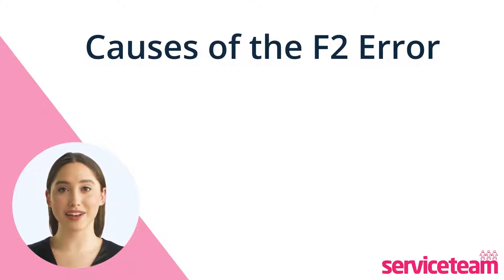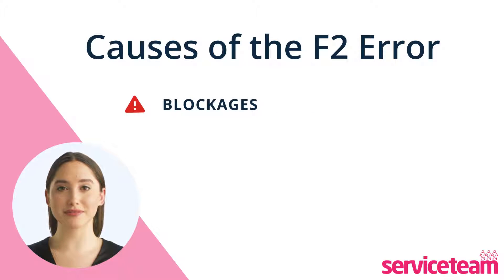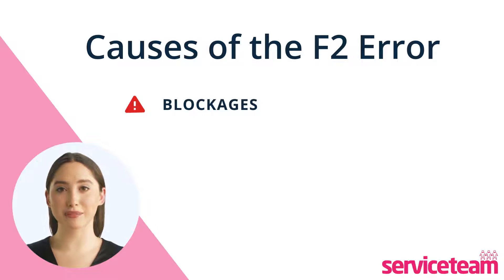Let's see what causes the F2 error. The main cause of the F2 fault is blockages in your heating system. These blockages can be because of the buildup of sludge, dirt, rust, or limescale. Sludge — a thick mix of debris, rust, and dirt — is common in many boilers. It gathers in the system, blocking pipes and disrupting water flow.